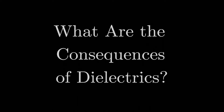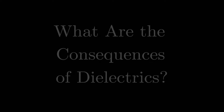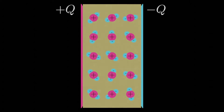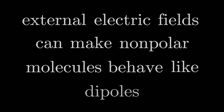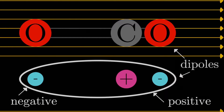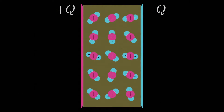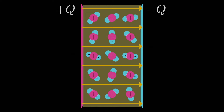Now we're ready to expand our knowledge of electric dipoles by imagining a bunch of them together. Imagine if we take an insulating block of material and stick it between an isolated charged parallel plate capacitor. What would happen? This insulating block is full of molecules, and we remember that externally applied electric fields have the effect of making non-polar molecules behave like dipoles or polar molecules. In the presence of an electric field between the capacitor plates, the molecules become polarized dipoles and align at least slightly in the direction of the electric field.